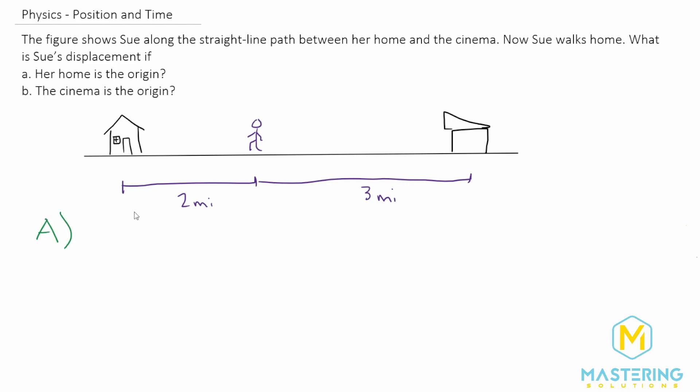So for part A we'll set her origin at her house. So here's a number line and this is zero. So we have one mile, two, three, four, and five at the movie theater.